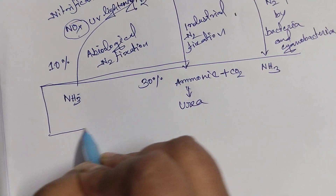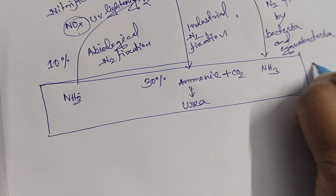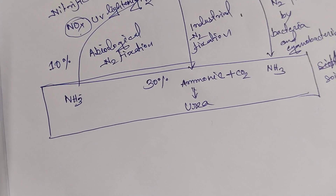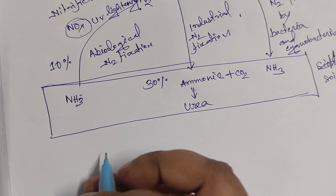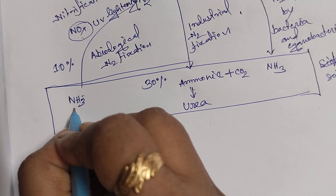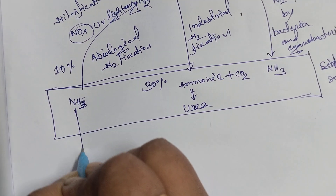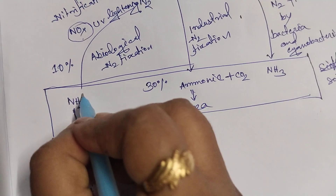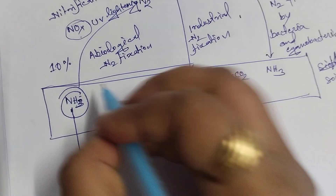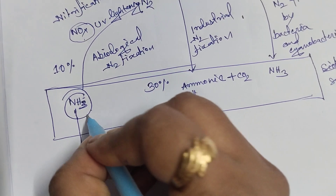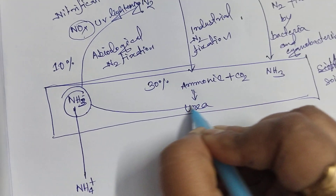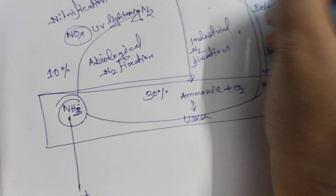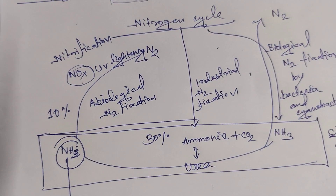Now, nitrogen is present in the soil in the form of ammonia. This ammonia is converted into ammonium ions. However, because ammonia is a volatile substance, some ammonia is converted back into nitrogen gas. This process is called denitrification.